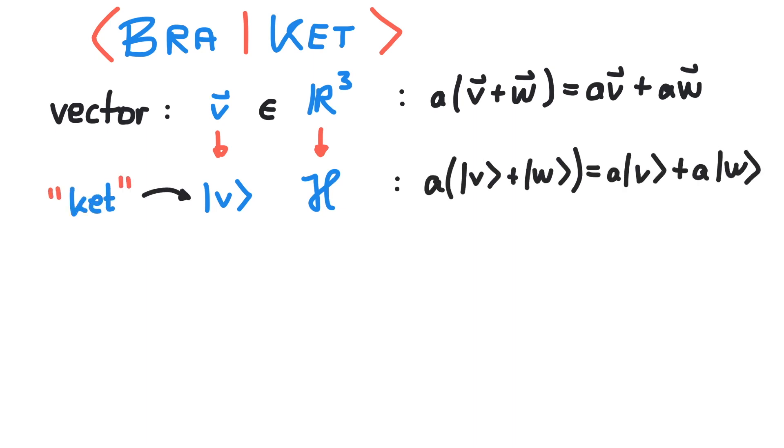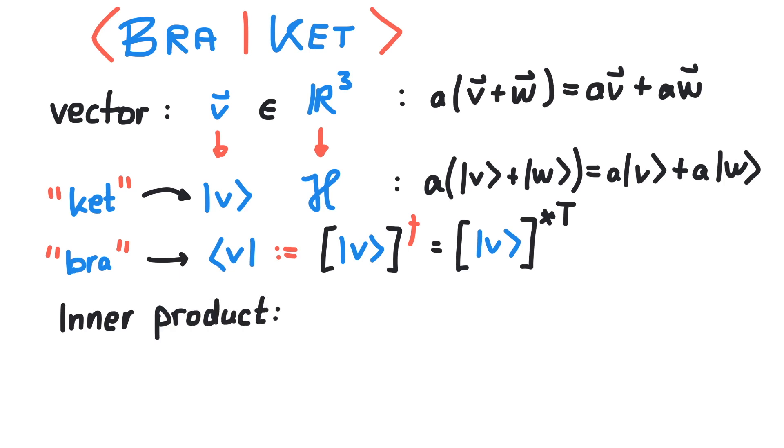For an inner product of two vectors, you need a bra vector. A bra is the Hermitian conjugate of a ket, and if we multiply a bra with a ket, it looks like this.